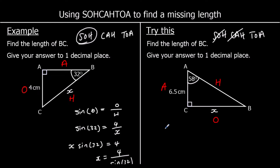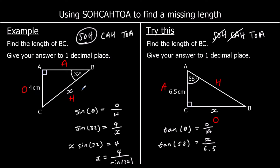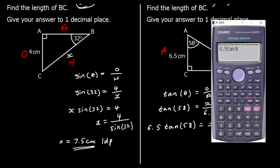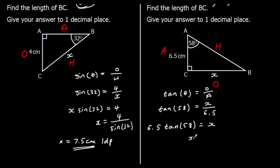TOA means tan theta equals O over A. Substituting in what we know — the angle is 58 — we get tan 58 equals x over 6.5. To get x by itself, we multiply both sides by 6.5, giving 6.5 times tan 58 equals x. Typing that into the calculator: 6.5 tan 58, to one decimal place, is 10.4. So x is 10.4 centimeters to one decimal place.